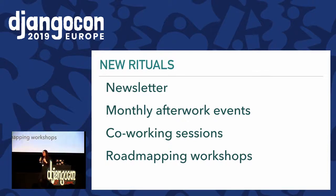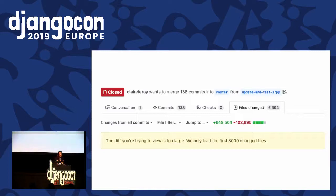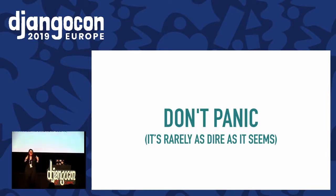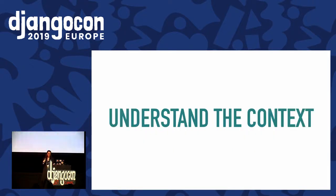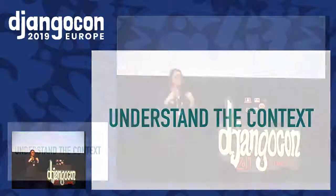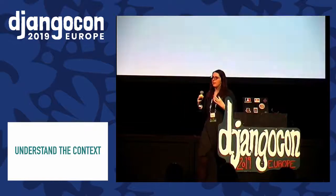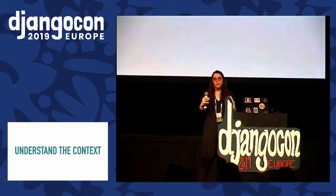And so this is where we were — working on knowing more about our contributors — and suddenly, this happened. One fine morning, this is the error message GitHub gives you when you have more than 3,000 changed files. I had never seen it before. The first thing to do is not panic, because things are not as dire as they seem. We panicked a little at first, but then we realized we know this person — we've had coffee with them and worked with them on other projects. So we just gave them a call and tried to understand their context.